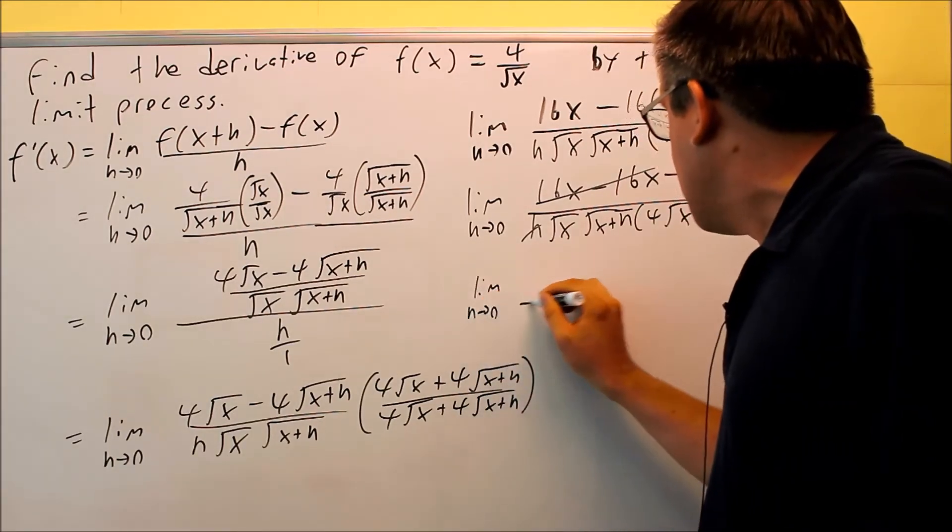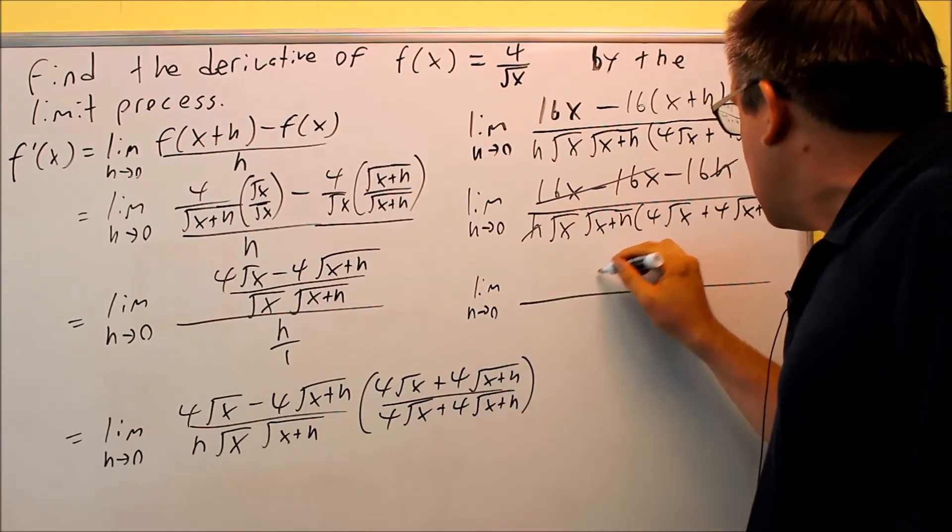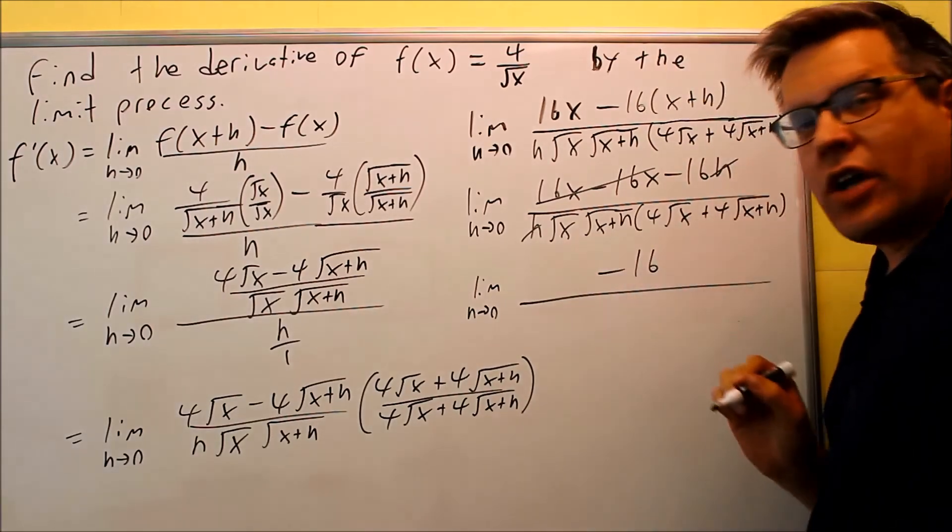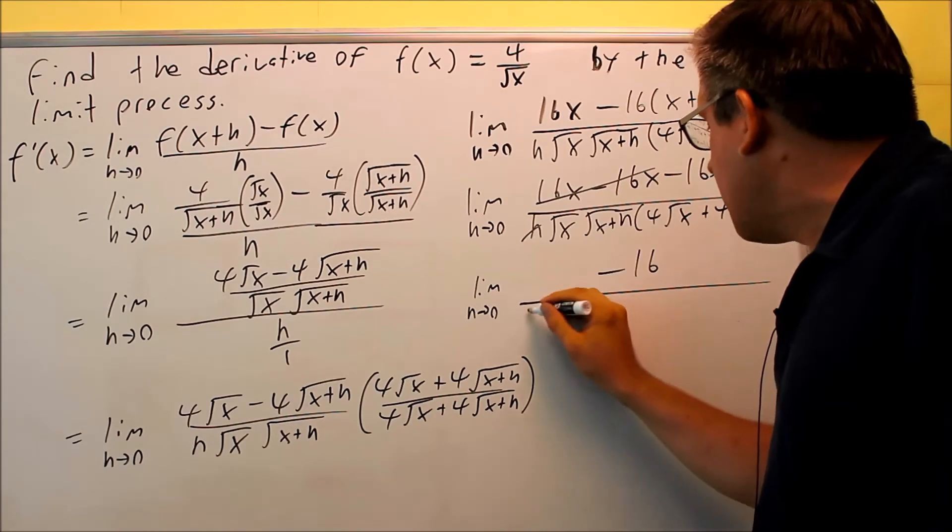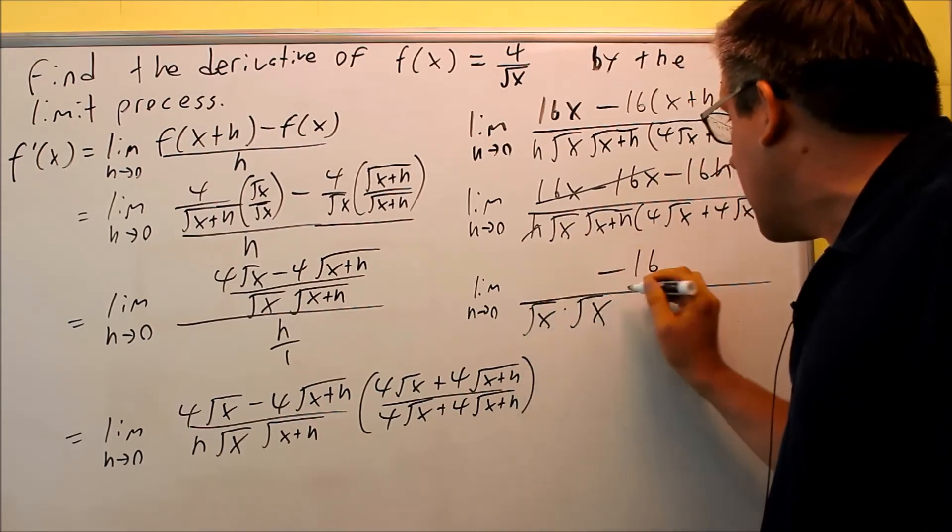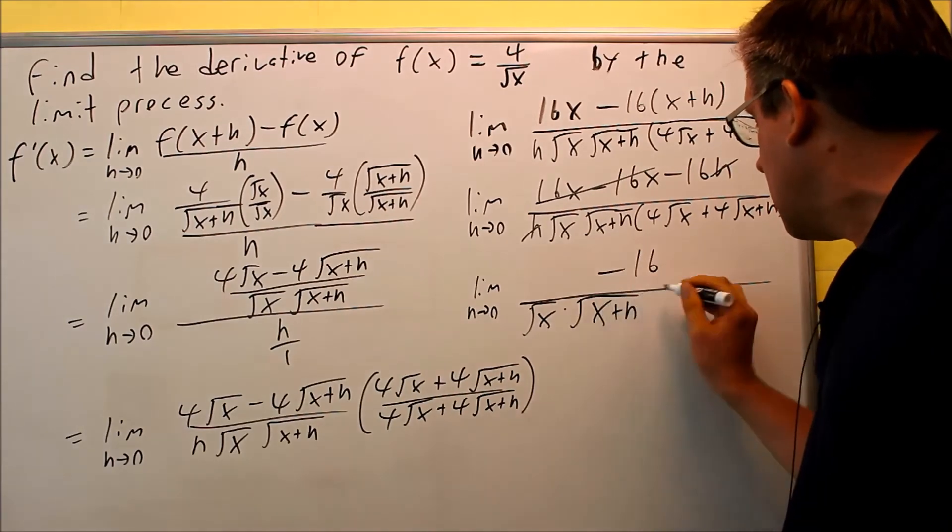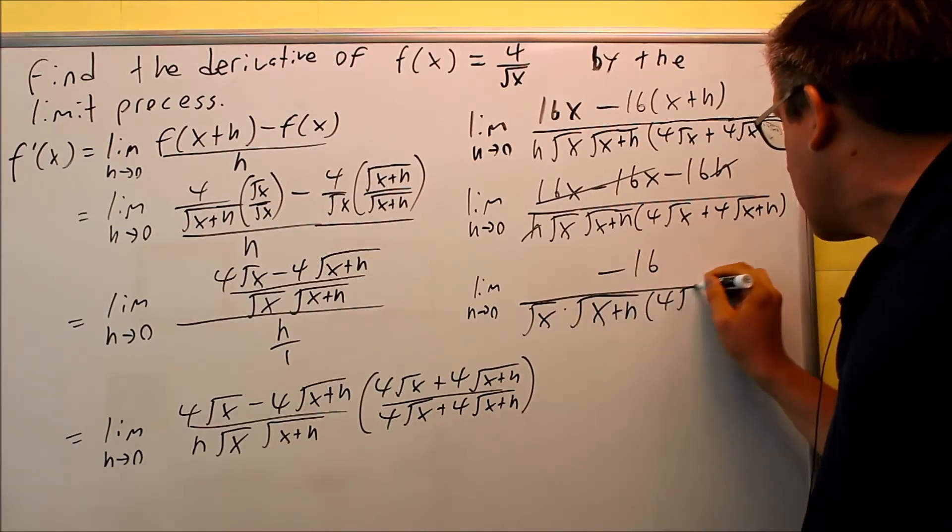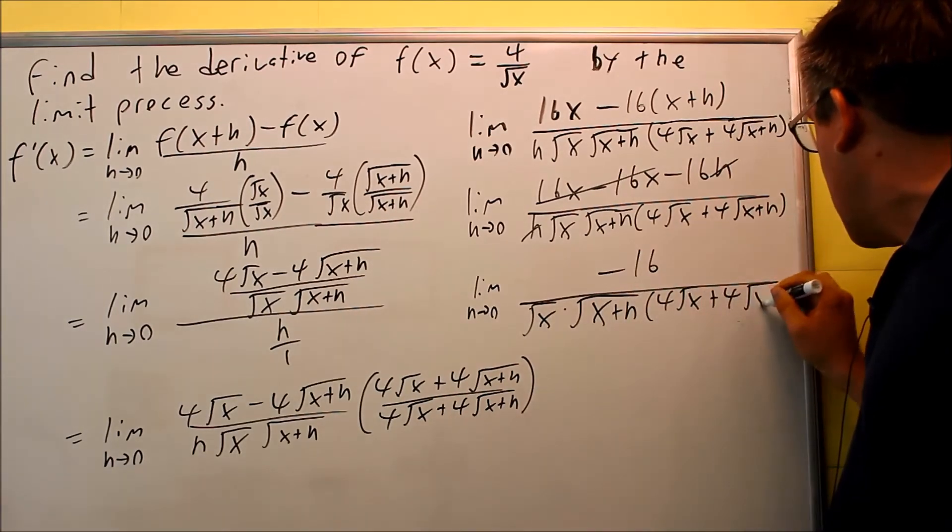I have limit h goes to zero. I have negative 16 is all I have left on there. In the bottom, I have this h is gone. One square root of x, square root of x+h and then inside four square root of x plus four square root of x+h.